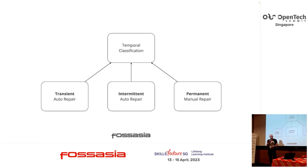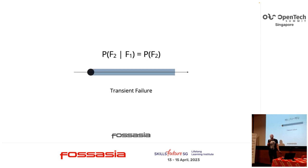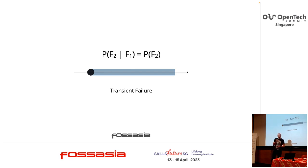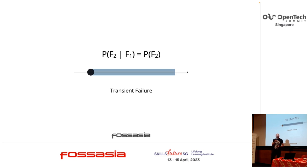On the temporal dimension, we can classify failure as transient, intermittent, and permanent. A transient failure is one where the probability of a second failure after the first is not elevated — transient failures are auto-repairing and need no intervention. For example, if the cause of a 'could not connect' exception is a router restart, that is a transient failure: once the router restarts, the connection can be made.